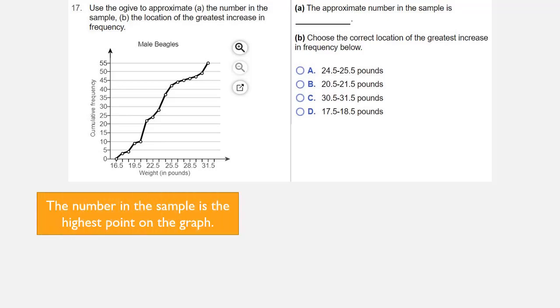The number in the sample is the highest point on an ogive, because an ogive is a cumulative frequency graph. The highest point on this ogive falls at 55, so the approximate number in the sample is 55.